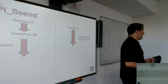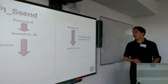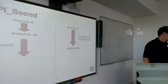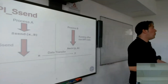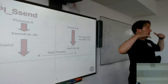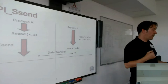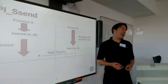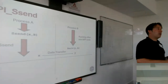Process B says: I would like to receive some data, put it into Y from A. At that point the data transfer happens — there's a synchronization in time. It's like when somebody phones somebody: at some point they're both on the line at the same time. That's why it's called synchronous send — a synchronization in time between sender and receiver, and the data transfer happens here.